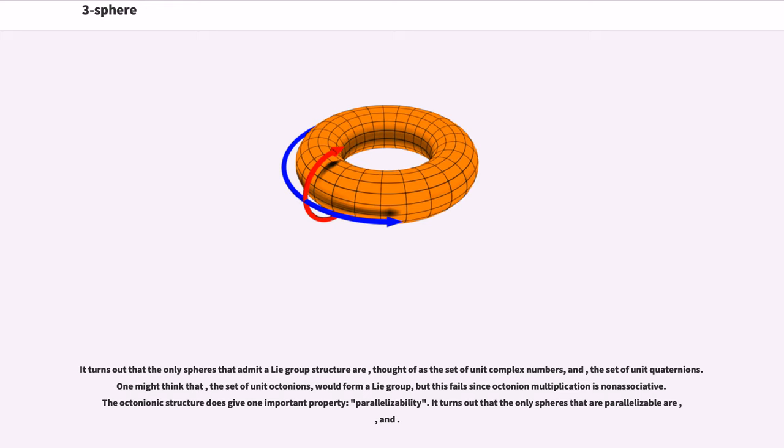It turns out that the only spheres that admit a Lie group structure are, thought of as the set of unit complex numbers, and, the set of unit quaternions. One might think that, the set of unit octonions, would form a Lie group, but this fails since octonionic multiplication is non-associative. The octonionic structure does give one important property, parallelizability. It turns out that the only spheres that are parallelizable are and.